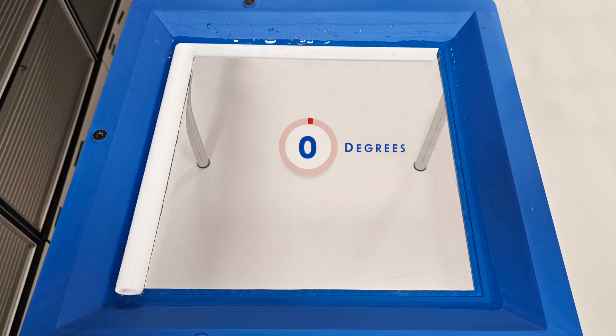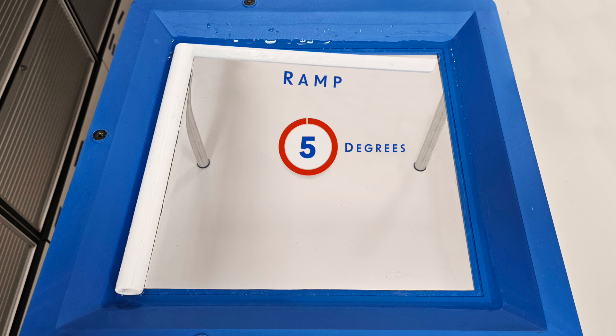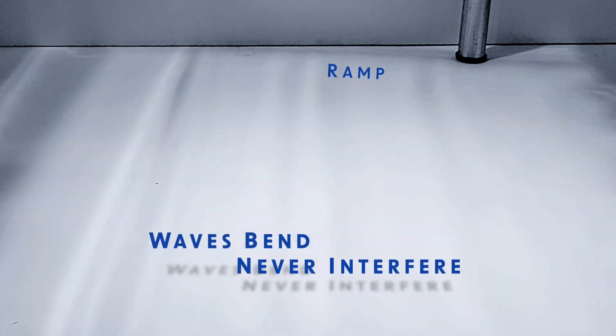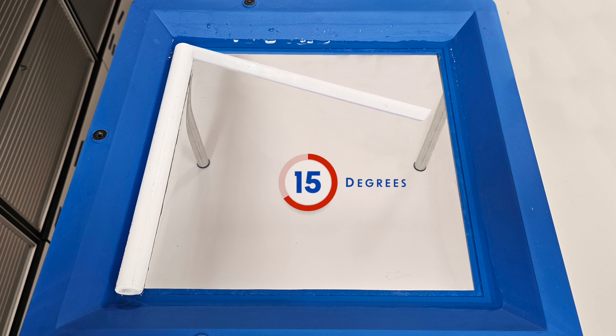When waves flow past a ramp set at a slight angle, they only bend, never interfere! When the ramp's angle is increased, we see a wave interference pattern.